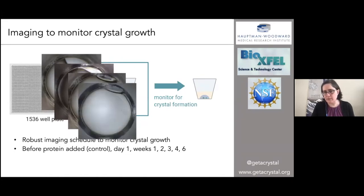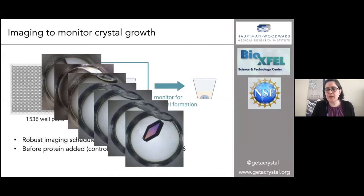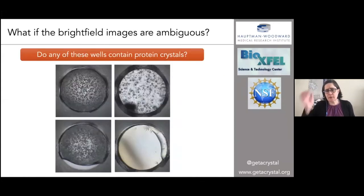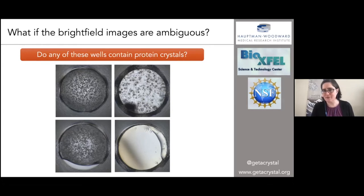When you've got 1536 wells, we watch over the course of six weeks — at day one, week one, week two, week three, and week four — and suddenly you have a really beautiful crystal that stays there at week six. One of the questions is: what if you can't actually see your crystals? What if your brightfield images are ambiguous? I want you to look at these wells and try to assess whether they contain protein crystals. All four of these wells actually contain protein crystals — they may not be the prettiest, but in some cases they're the only ones that formed even in the 1536 screen.